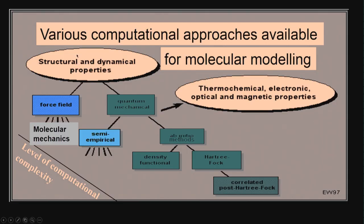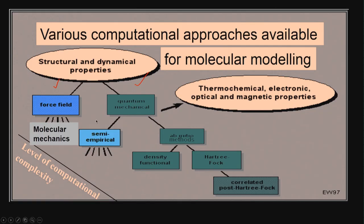There are different computational approaches for molecular modeling. One is called the force field-based approach, and the other is called the quantum mechanics approach. The force field-based approach is the easiest one — it does not require too much computer resources or complexity, but we can get only some set of parameters using it. We can get structural properties — the 3-dimensional structure — the shape of the molecule, and the diffusion coefficient.